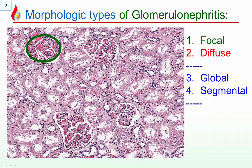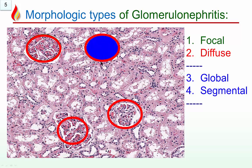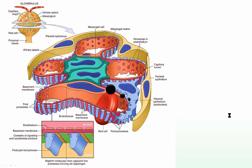Focal means involvement of some glomeruli, not others. Diffuse means all glomeruli are affected. Global means one whole glomerulus. Segmental means a portion or one of the capillary tufts. So when we say focal segmental glomerulosclerosis, it means only a few glomeruli are affected, and only partial segments of those glomeruli — focal segmental.